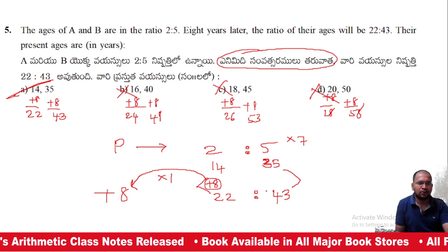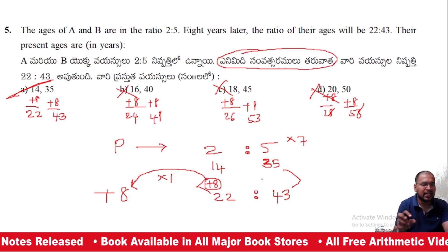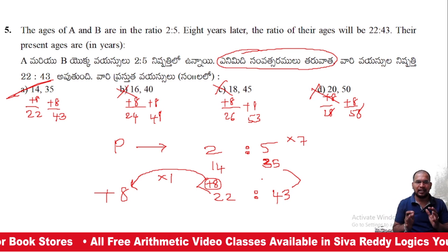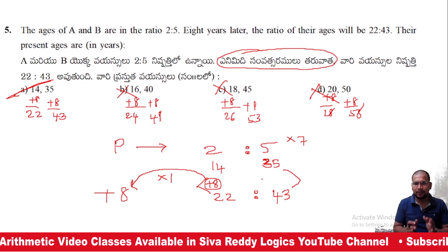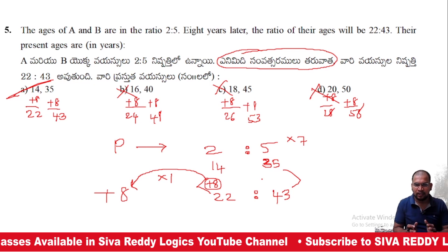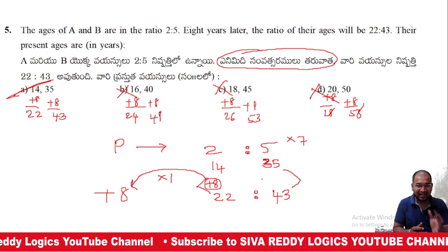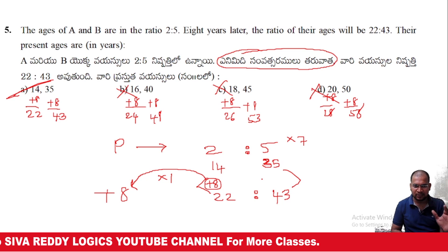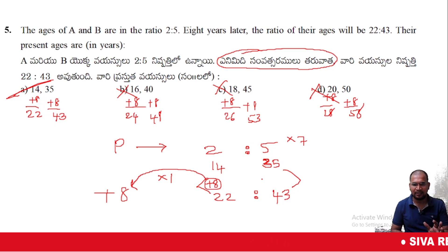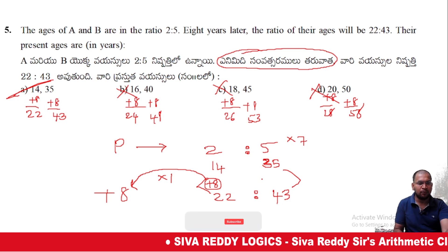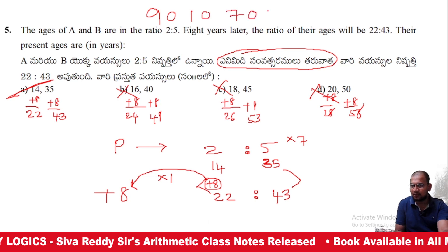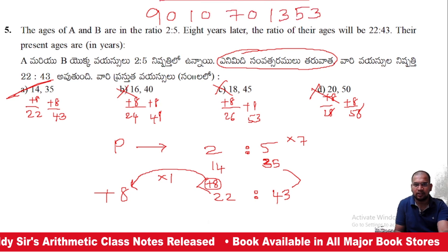Option D will be the right answer. This is all about problems on ages — previous year questions are discussed. You can find the questions in the SivaradyLogics book, with written concepts, basic concepts, model-wise and type-wise questions, bilingual written solutions. The book is available on SivaradyLogics. Follow this YouTube channel for the easy approach. Thank you all!